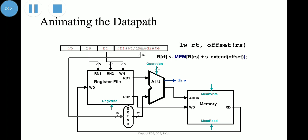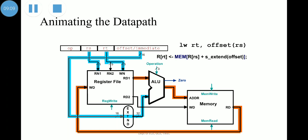In the animation of the data path for the load word instruction, the instruction supplies the base register and the register to be loaded. The 16-bit offset is extended to 32 bits and fed into the ALU. The base register value read from the register file is also fed into the ALU; both are added to produce the memory address from which data is fetched. The fetched data is then returned to the register file into the register number specified by the instruction. Note that RD2 is not used here.